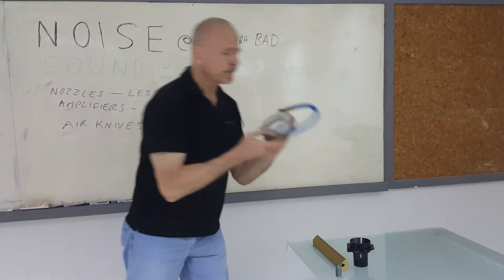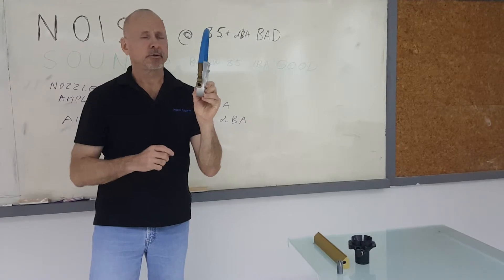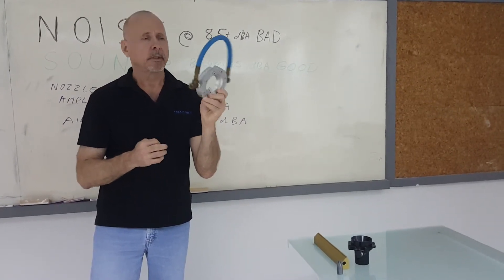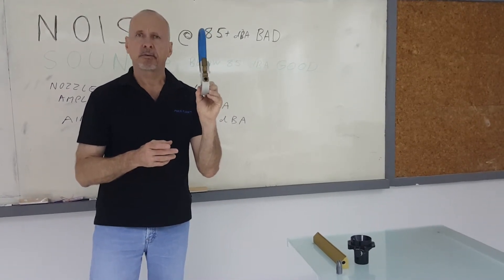Another version used in extrusion, an air wipe, used for drying extruded cable, pipe, hose, any sort of extruded profile, can also reduce noise 10 to 12 decibels.